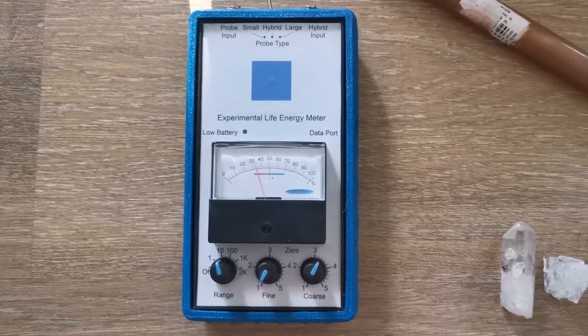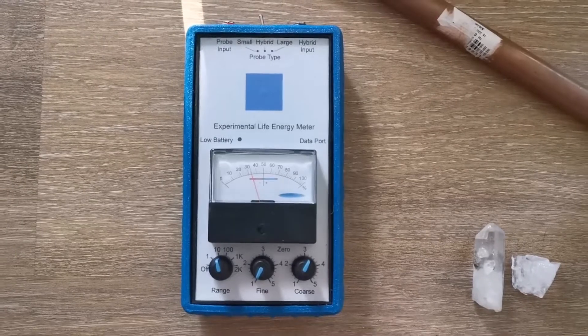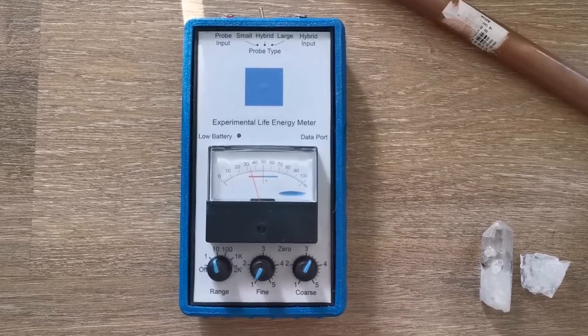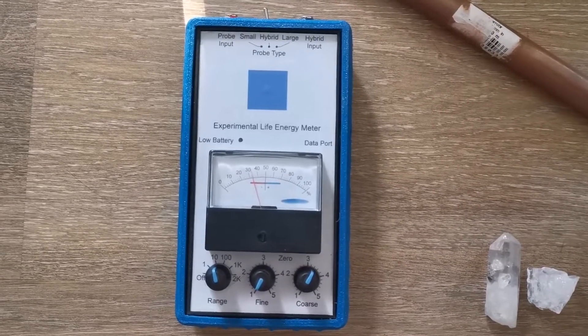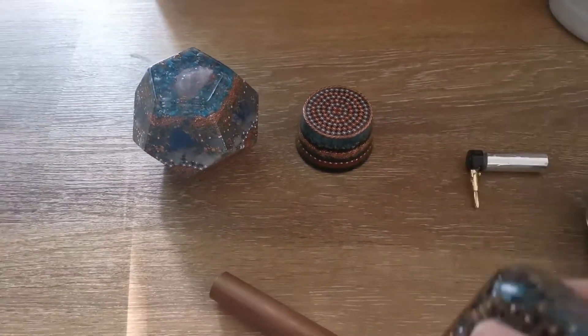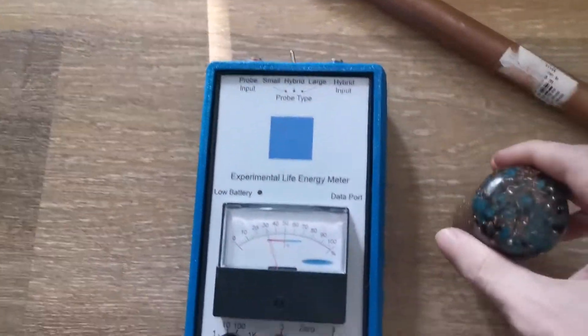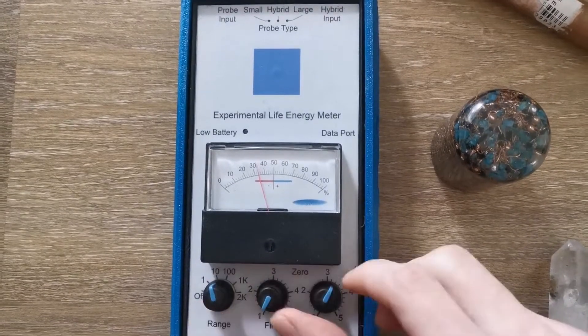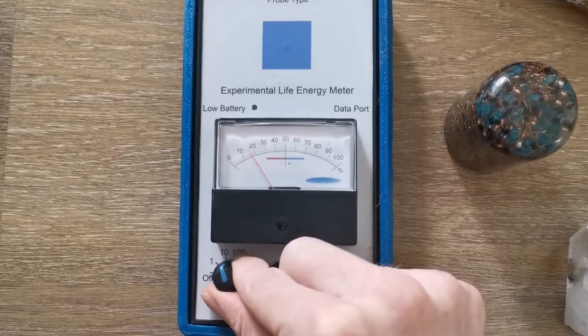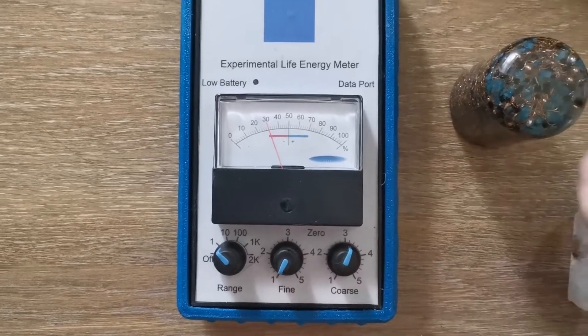It's also commonly used to test the strength of Orgonite, which I think is a bit questionable. I have here three pieces of Orgonite. Let's start with the smallest and put it on here. Let's first set this down a bit, but change the range to 1 again. And now we are at 30, which is fine.